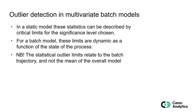Coming to outlier detection in multivariate batch models: in static models, we use statistics that are static, so there is one critical distance limit for a continuous process. But in this case, we are monitoring the limits as they change over the batch duration. So we are monitoring the process not relative to the mean of the model, but always in relation to where we are on the trajectory in the batch process.